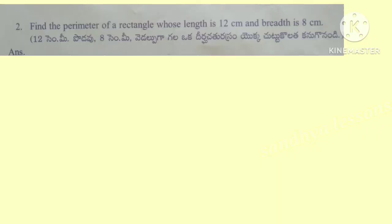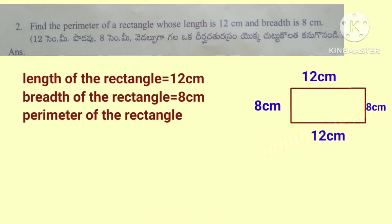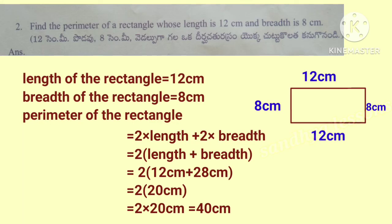Second problem: find the perimeter of a rectangle whose length is 12 cm and breadth is 8 cm. Length equals 12 cm, breadth equals 8 cm. Formula for perimeter of a rectangle is 2 into length plus 2 into breadth, which equals 2 into (length plus breadth), that is 2 into 20 cm, which equals 40 cm. Therefore, perimeter of the rectangle is 40 cm.